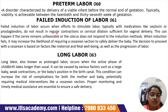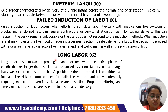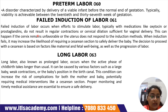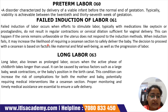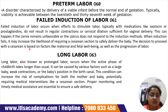Failed induction of labor, subcode O61, occurs when efforts to stimulate labor — typically with medications like oxytocin or prostaglandins, which are responsible for uterine contraction — do not result in regular contractions or cervical dilation sufficient for vaginal delivery. This can happen if the cervix remains unfavorable or the uterus does not respond to the induction method. When induction fails, it may increase the likelihood of requiring a caesarean section.